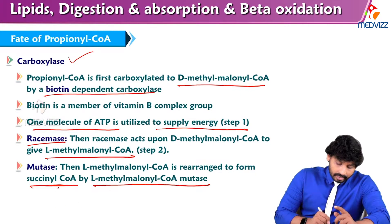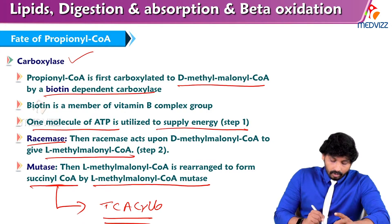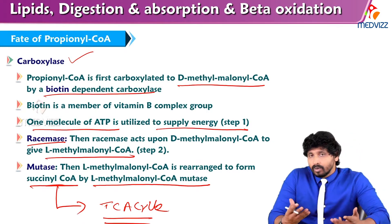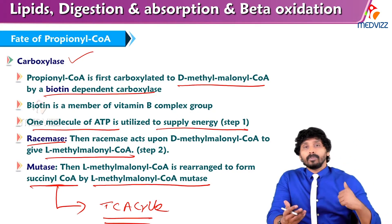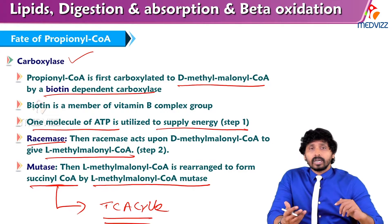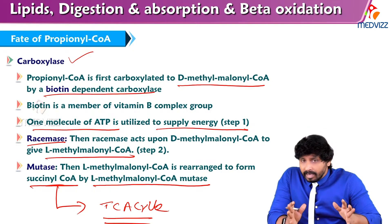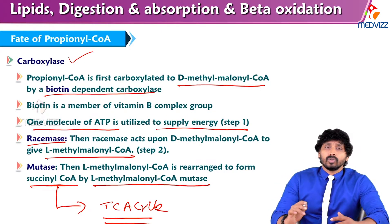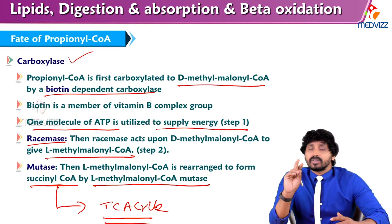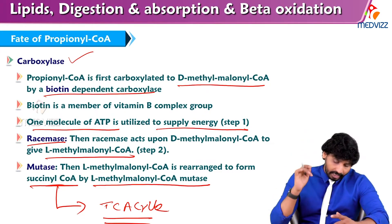Where have we seen succinyl-CoA? Succinyl-CoA is an intermediate of the TCA cycle. Propionyl-CoA cannot be converted into acetyl-CoA, but it has to somehow enter into the TCA cycle. Through which form will it be entering? By making succinyl-CoA. So there are three steps involved: one is the carboxylation reaction, one is the racemase reaction, and one is the mutase reaction.